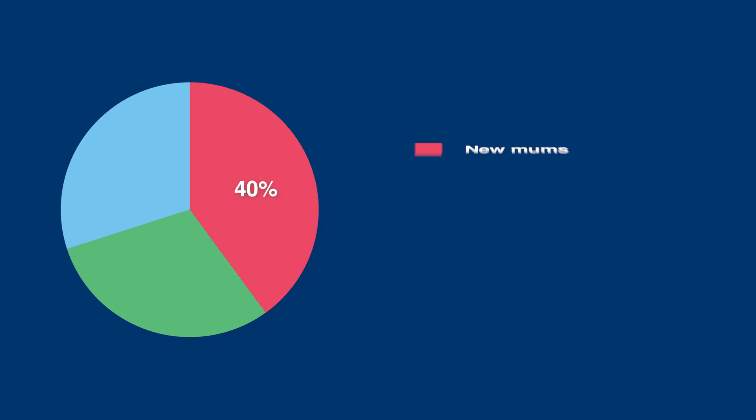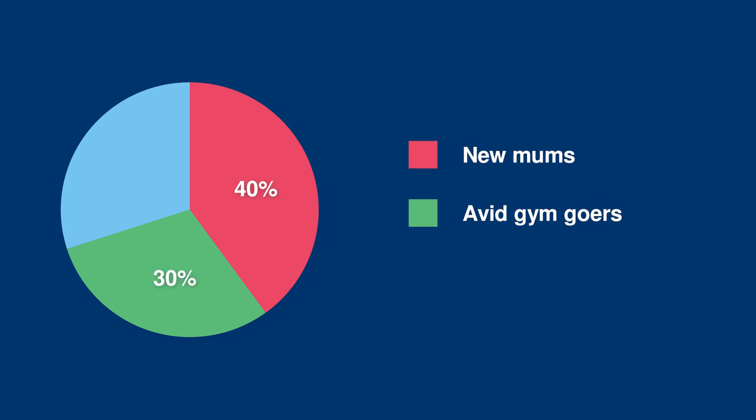Let's say you have a popular article about the best exercise bikes, and you assume that the majority of existing readers frequently work out from home. However, you run a poll and it turns out that 40% of your readers are new mums, 30% are avid gym goers, and only the last 30% are those who already work out from home. Armed with this information, you begin keyword research and find a ton of keywords surrounding the benefits of working out from home and quick workouts you can do with limited equipment — topics that both you and your competitors fail to discuss. Creating new content to include these topics is therefore likely to provide a massive boost to that website's traffic and conversions.